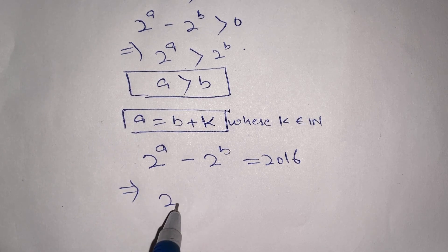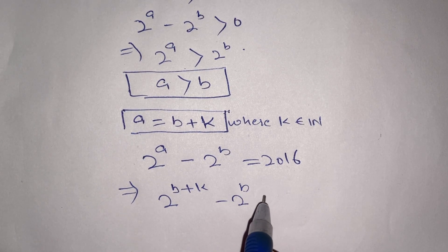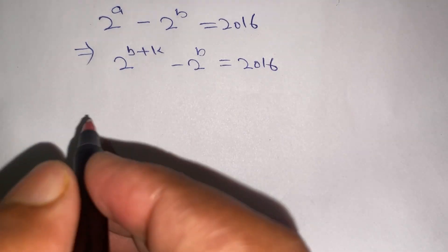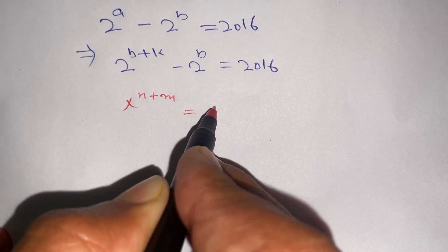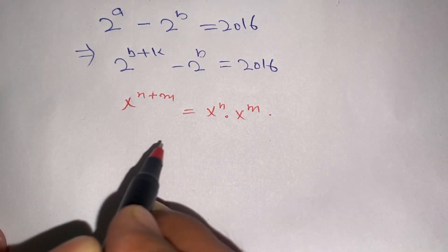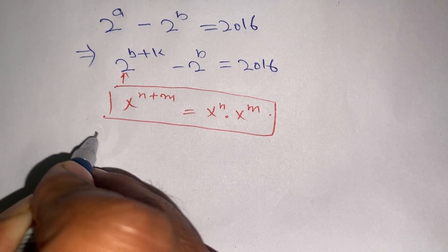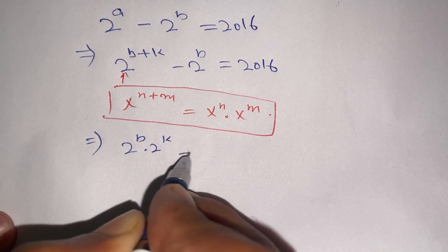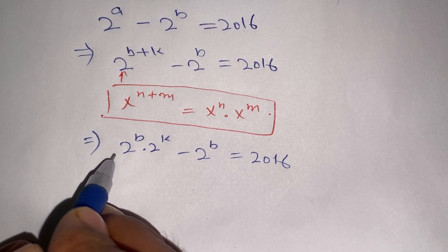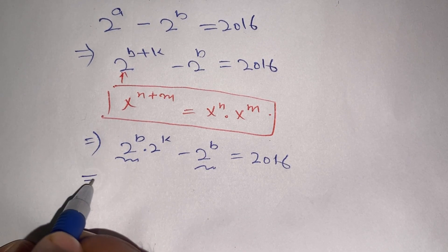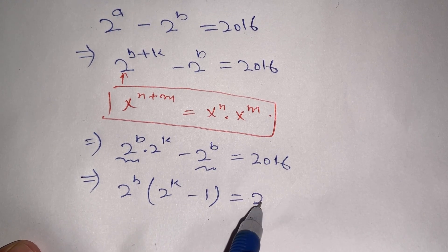Substituting, 2^(b+k) minus 2^b equals 2016. We use the algebraic identity x^(n+m) equals x^n times x^m. Applying this identity, we get 2^b times 2^k minus 2^b equals 2016. We can factor out 2^b to get 2^b times (2^k minus 1) equals 2016.